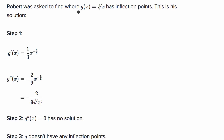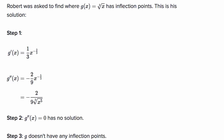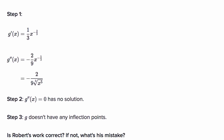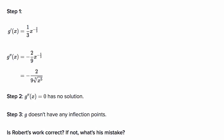Robert was asked to find where g of x, which is equal to the cube root of x, has inflection points. This is his solution. We are asked: is Robert's work correct? If not, what's his mistake? Pause this video and try to figure it out on your own.